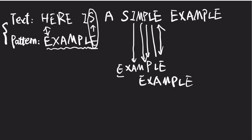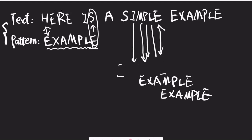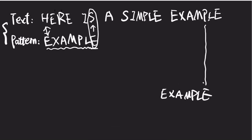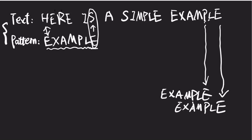Here E is the same with E, and we can skip the whole pattern to align this to E. And we can skip even further. We compare from the rightmost position again — P is not equal to E and P is here, so we align to P. Then M, A, X, E. Compare from the rightmost position again, and finally find the match.